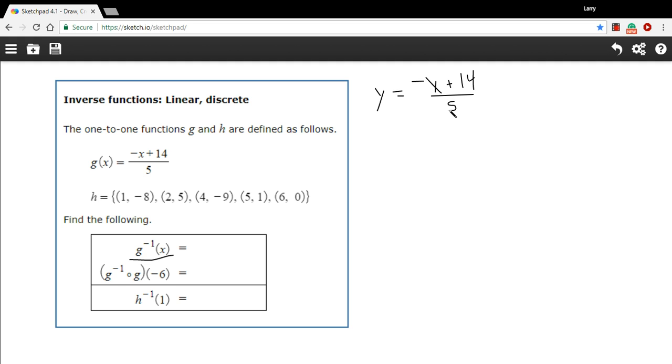Then, we're going to switch the x and the y. So we get x out here, and we get a negative y plus 14 over 5, and then we just solve this for y again.